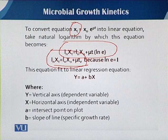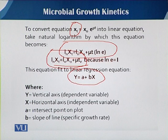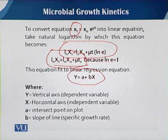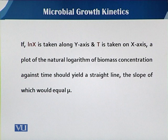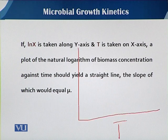This fits the linear regression equation y = a + bx, where y is the vertical axis (dependent variable), x is the horizontal axis (independent variable), a is the intercept, and b is the slope. So if ln(X_t) is plotted on the y-axis and t on the x-axis, we get a straight line.